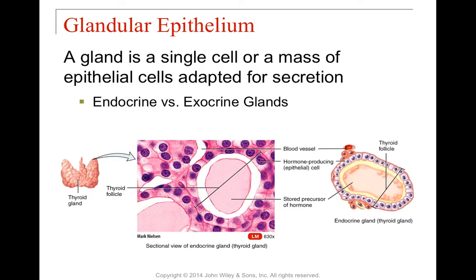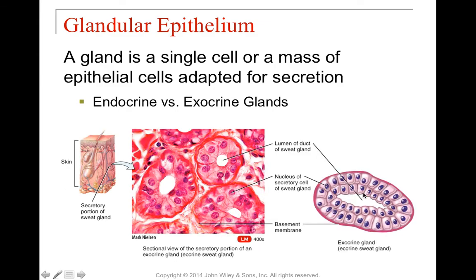Let's talk about glands for a second. Glands and their secretion of different hormones will get their own chapter next semester, but let's talk about their structure for just a moment. We have endocrine glands and exocrine glands, and the difference is their method of secretion. Endocrine glands secrete into the surrounding blood vessels — getting picked up and traveling through the bloodstream. An exocrine gland has secretory cells that secrete outward — for example, a sweat gland secretes out instead of going into the bloodstream.